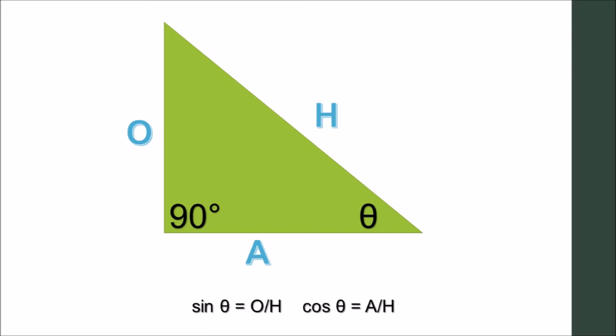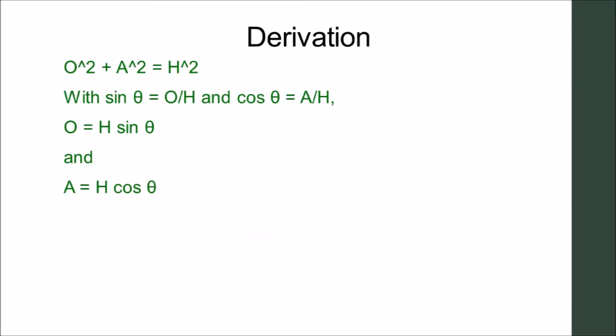Let's start with the Pythagorean theorem and the trigonometric definitions of sine and cosine. Note that O equals H times sine of theta, and A equals H times cosine of theta.